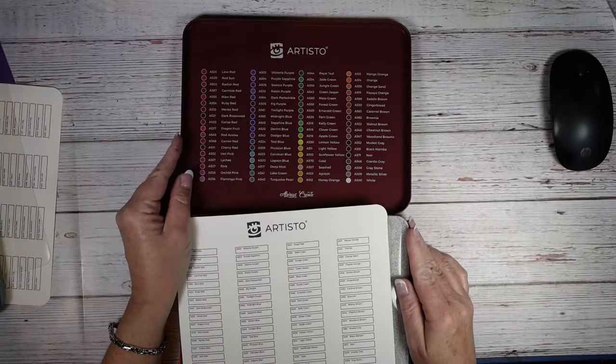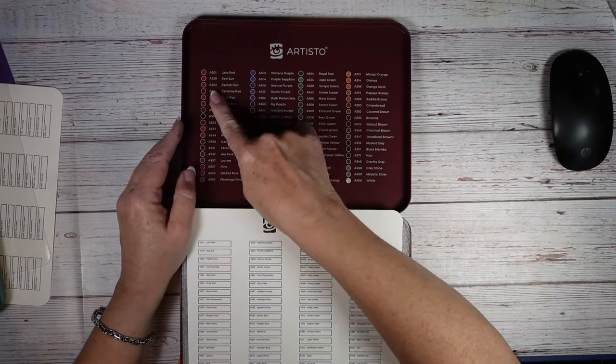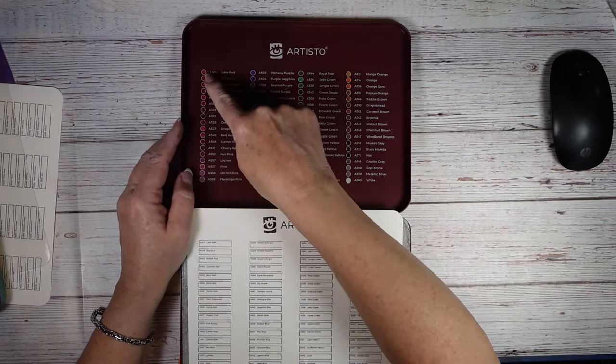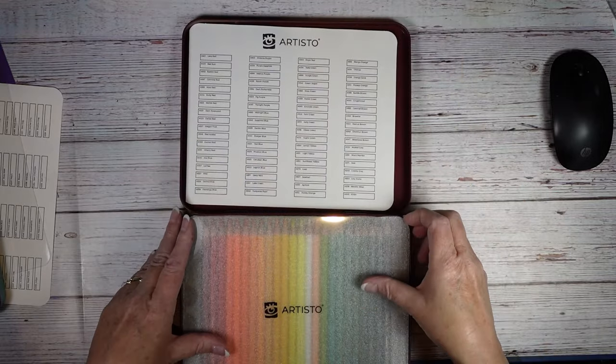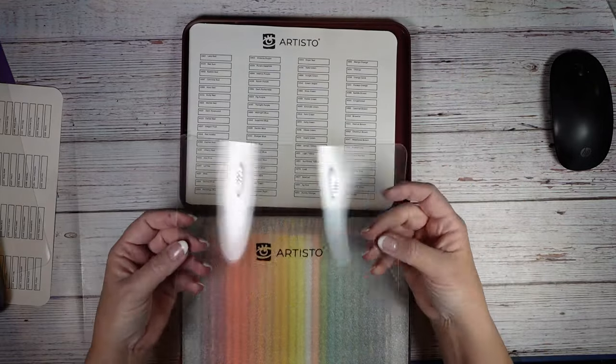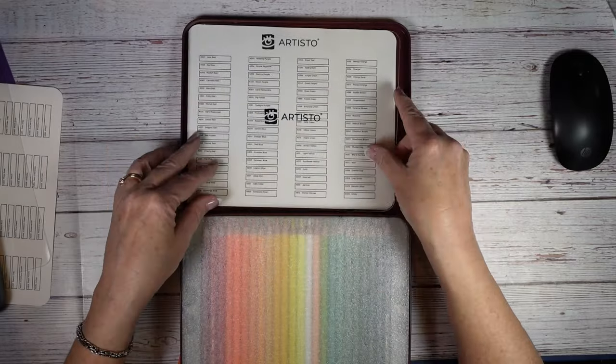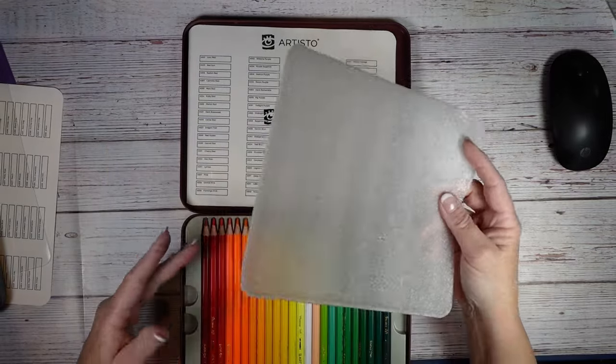And just like with the colored pencils, it does have the name and number and a swatch of all the colors. It does have a swatch chart. It does have the little plasticky piece and the foam piece.